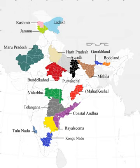Goa's northern exclaves of Daman and Diu became a separate union territory. Three new states were created in November 2000: Chhattisgarh was created out of eastern Madhya Pradesh, Uttaranchal (later renamed Uttarakhand) was created out of the mountainous districts of northwest Uttar Pradesh, and Jharkhand was created out of the southern districts of Bihar. On 2 June 2014, Telangana was separated from Andhra Pradesh as the 29th state of the union.